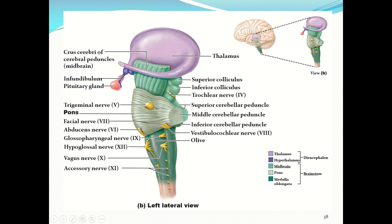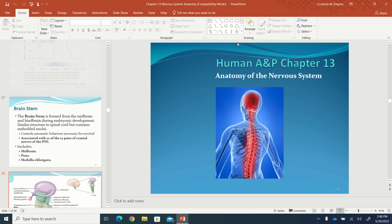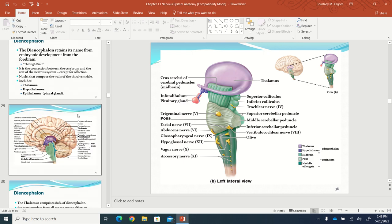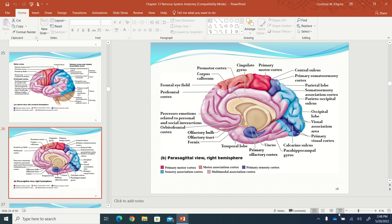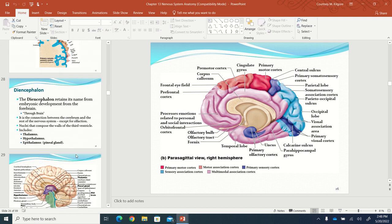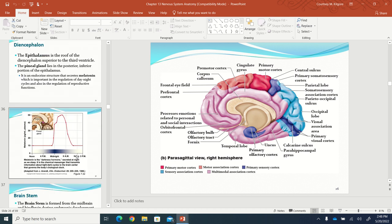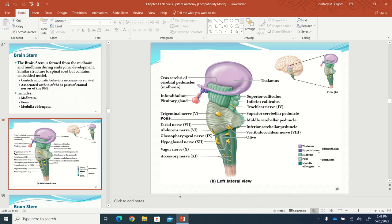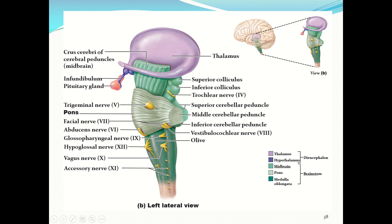Ten of the twelve cranial nerve pairs are visible in the illustration in yellow. The first two cranial nerves — the olfactory nerve (for smell) and the optic nerve (connected to the eyeballs, going back to the visual cortex) — are connected directly to the brain, while the other cranial nerves are connected to the brainstem. The cranial nerves will be covered in more detail in lab.